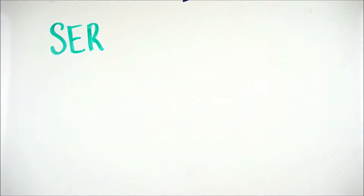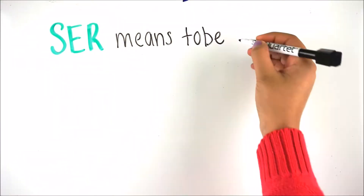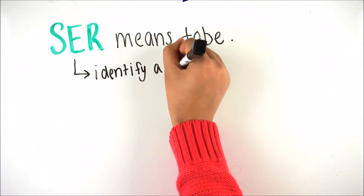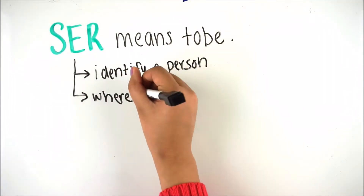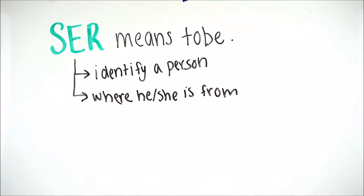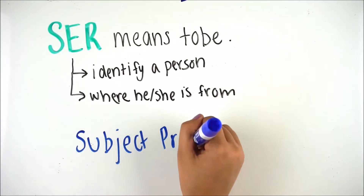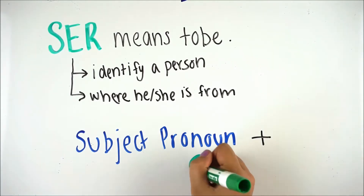The verb ser in English means 'to be.' You use ser in order to identify a person, and you also use it to say where he or she is from. In a sentence, you would combine the subject pronoun and the verb ser.